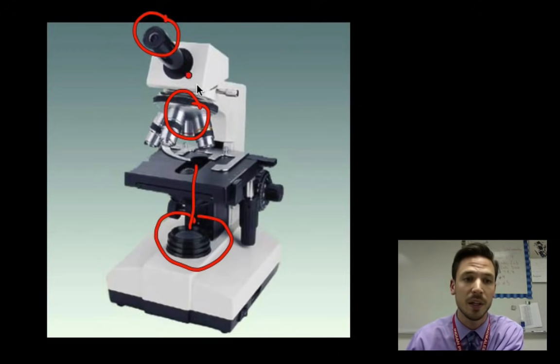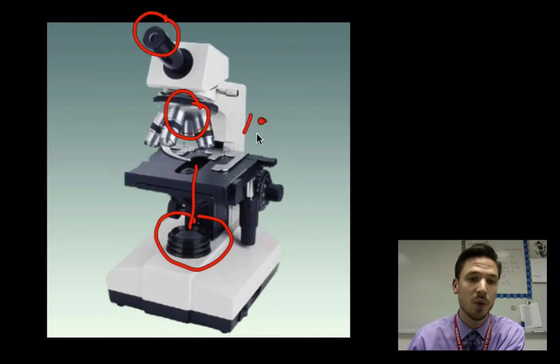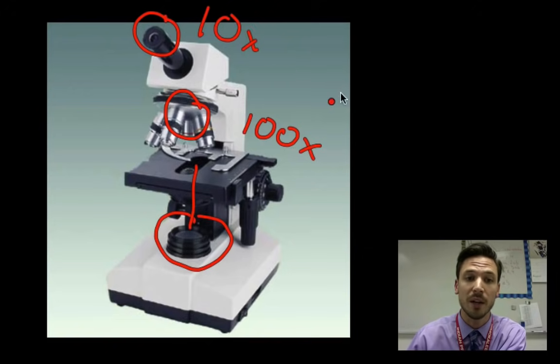And same exact way of calculating the magnification as before. Let's say my objective lens in this case has a 100x magnification, let's say my eyepiece again has a 10, well what's my total magnification? Well 10 times 100 is going to be 1000x total.